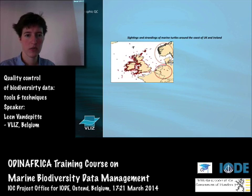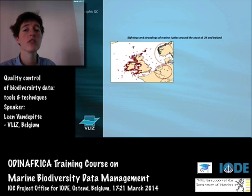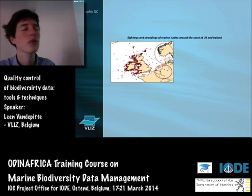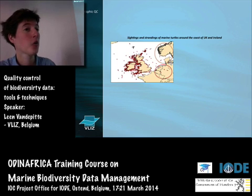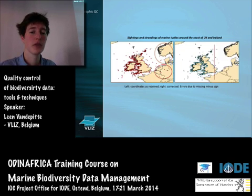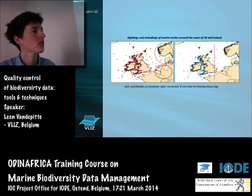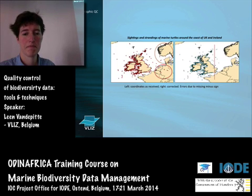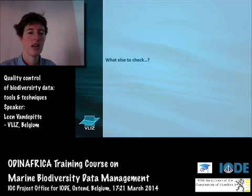One more example: sightings and strandings of marine turtles around the coast of the UK and Ireland. The dataset title immediately tells you all dots should be around the UK and Ireland. Instead, we had dots far out at sea away from the focal area, and also dots on land. After communicating with the provider, it was again the plus/minus sign mistake. Once corrected, the result was a very clean, correct map.